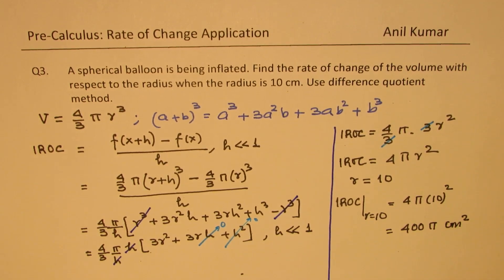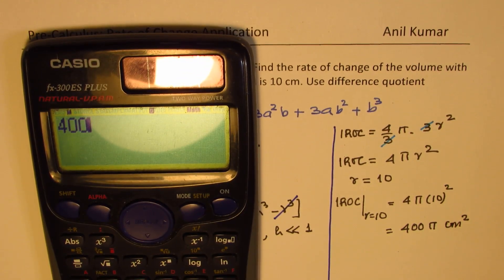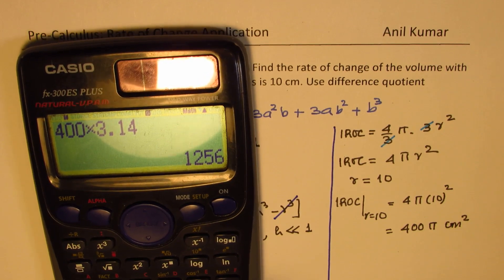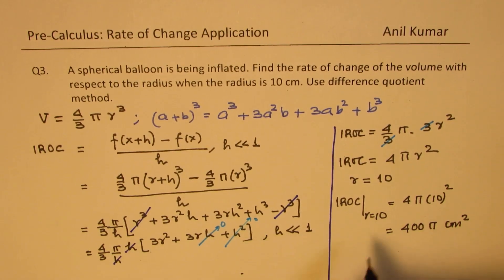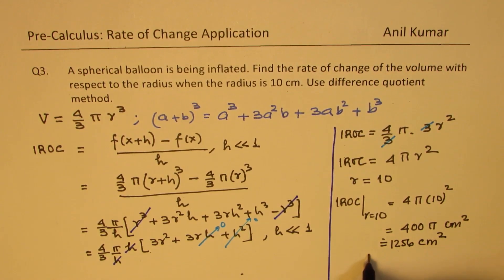If you want you can calculate the decimal value. So 400 times 3.14 gives you 1256 approximately. So approximately 1256 centimeters square. That becomes your answer to the given question.